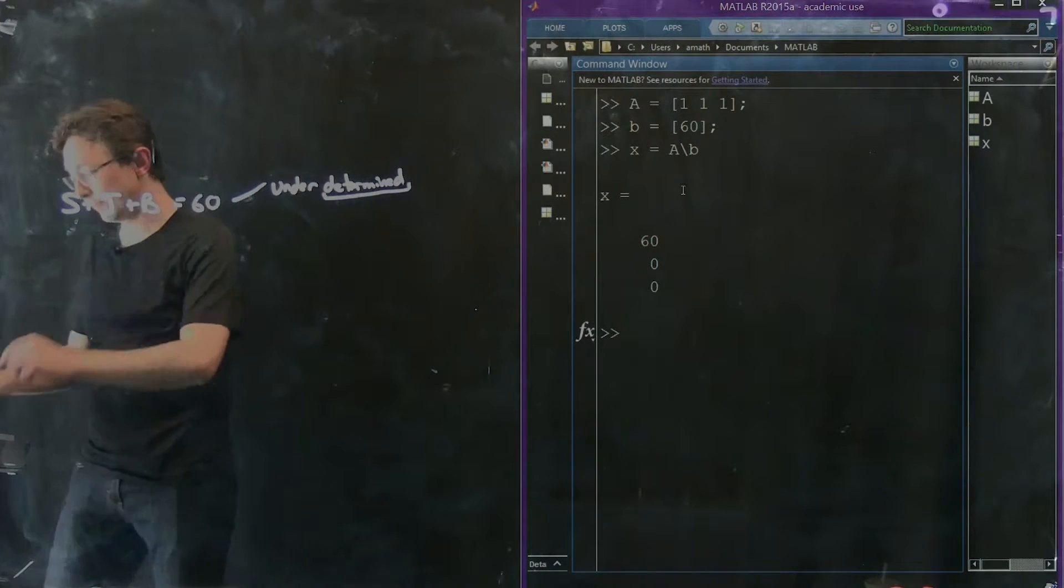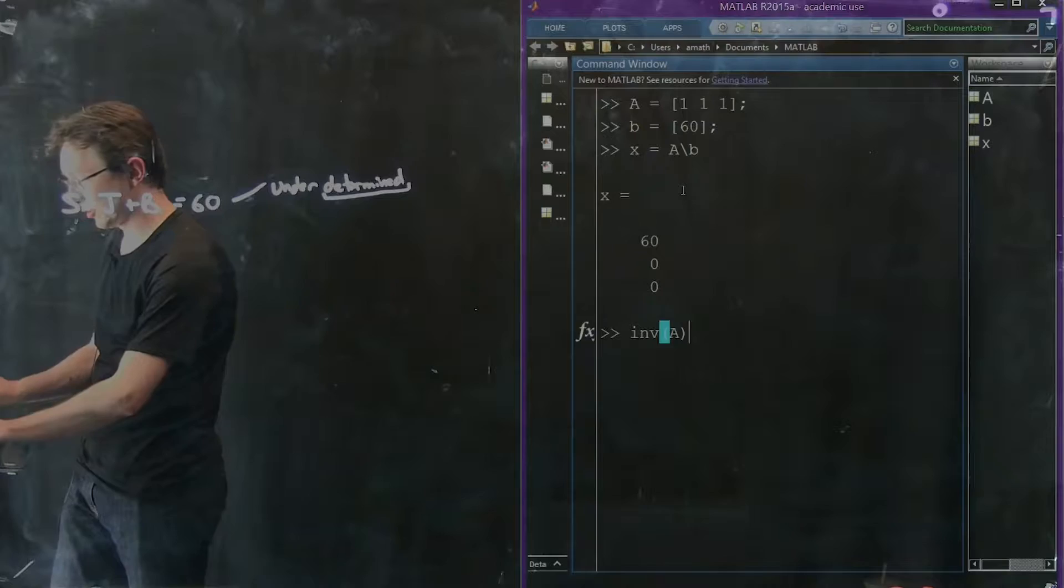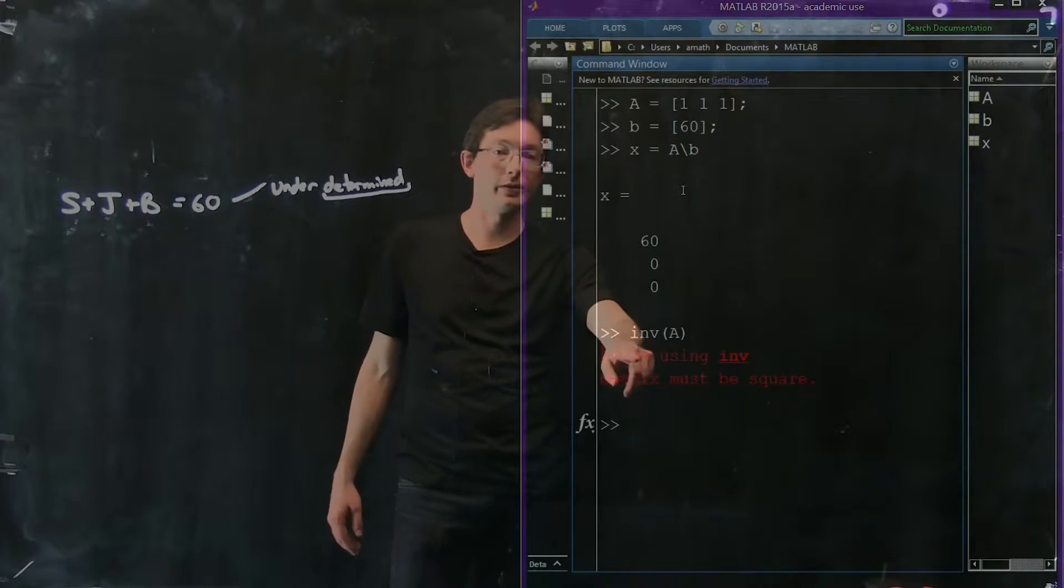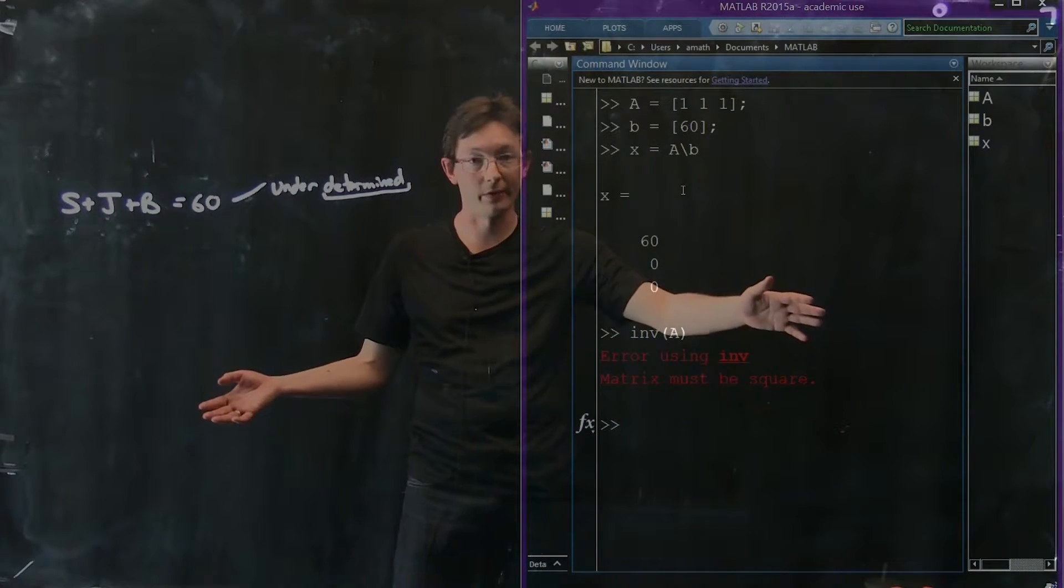Now I can't take the inverse of A because it's not square. If I try, MATLAB will complain. It says, error using inverse matrix must be square. Makes perfect sense.